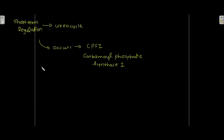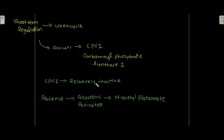The short-term regulation of the urea cycle occurs at the enzyme CPS1 — carbamyl phosphate synthase 1. CPS1 is relatively inactive in the absence of its allosteric activator, N-acetylglutamate. If N-acetylglutamate is present, it will activate CPS1 and the urea cycle will be activated. If N-acetylglutamate is absent, CPS1 will not be active and the urea cycle will not take place.